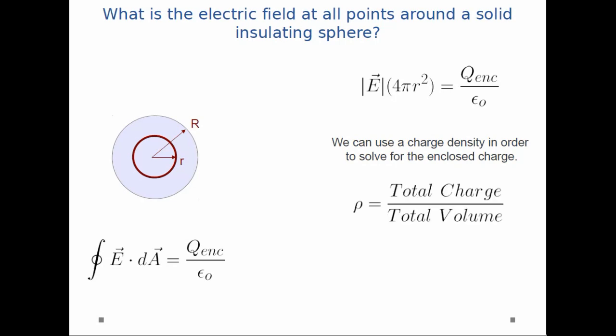So, we can determine a charge density in order to solve for the enclosed charge. My charge density is just going to be the total charge on the sphere divided by the total volume of the sphere. The total charge is just Q. And the total volume is 4 thirds pi R cubed, since it is a sphere.